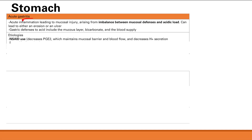Just remember: a curling iron can burn you. Next is a brain injury, also known as a Cushing ulcer. Brain injury increases vagal stimulation. Vagal stimulation, during rest and digest, increases H+ production through acetylcholine. So increased H+ production causes an imbalance between mucosal defense and acidic load, leading to acute gastritis.